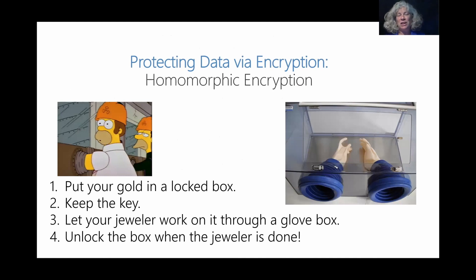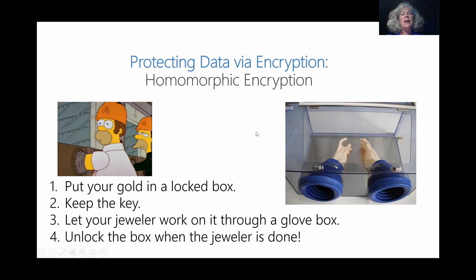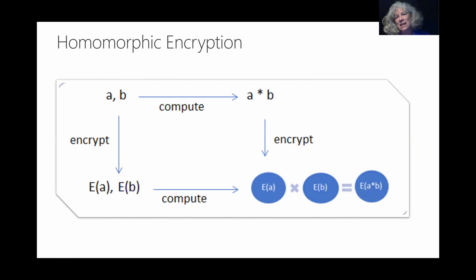I like to explain homomorphic encryption by relying on Homer Simpson — as someone tweeted in one of my earlier talks. The idea is that Homer Simpson is a jeweler and you have some valuable gold that you want to share with this jeweler to get some jewelry made. But since you don't trust Homer Simpson, you lock your gold into a box and ask Homer to work on it using a glove box. The glove box is locked and you keep the key. Homer works on the gold through the gloves, then returns the box to you, and you unlock it to get your jewelry.